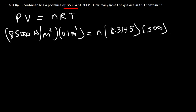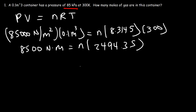Multiplying 85,000 by 0.1 gives 8,500 newton·meters. Then 8.3145 times 300 equals 2,494.35. So N equals 8,500 divided by 2,494.35, which gives 3.4 moles of gas in this container.